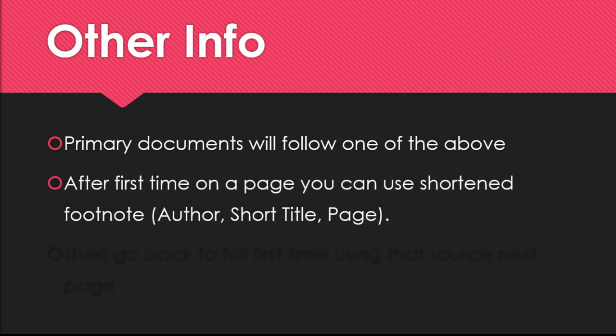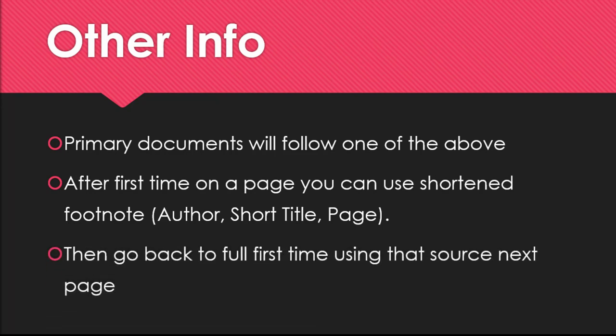You'll also notice that if you're citing the same source more than once on the same page, after the first time you can use a shortened footnote, which only includes the author's last name, the title of the source or a shortened title if it's a really long one, and the page number where the information came from. You'd use the full note once again the first time on a following page, then go back to the shortened version until you change pages again.